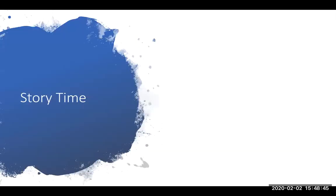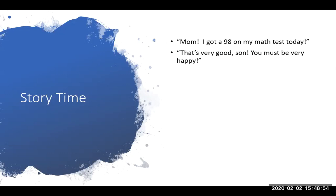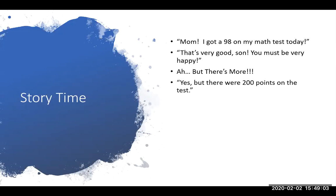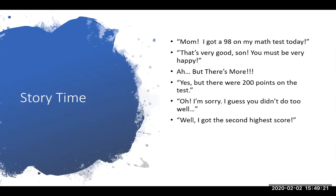I'm going to tell you a story to help make this clear. A kid comes home from school and says, 'Mom, I got 98 on my math test today.' She says, 'That's very good, son. You must be very happy.' But there's more — yes, but there were 200 points on the test. Normally when we say somebody got a 98, everybody assumes it's 98 out of 100. But it's important to ask how many points it was out of. Here we can see this kid didn't do that well at all. But the kid says, 'I got the second highest score.' So that's really what matters more — not how many points it was out of, but where the kid was in reference to their peers.